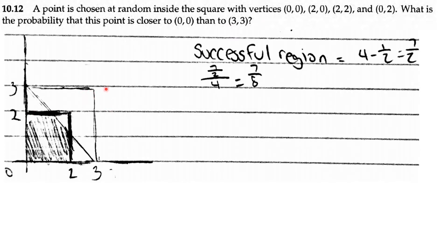So here's (0,0) and here's (3,3). And this square over here is the square with vertices (0,0), (2,0), (2,2), and (0,2).